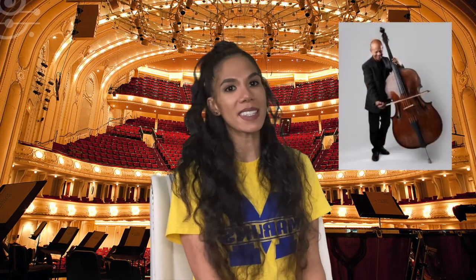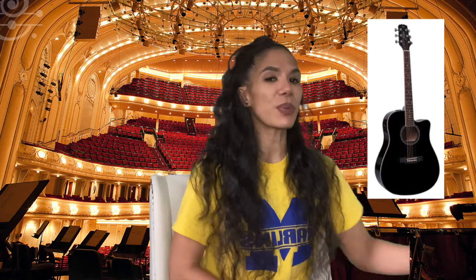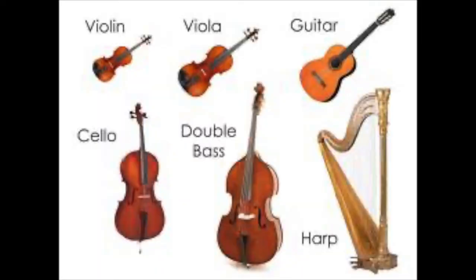Let's start off with the strings family. Instruments that are part of this family are the violin, the viola, the cello, the double bass, and the harp. These are the instruments you would typically find in the orchestra, but there are other members of the string family as well, such as the guitar, and a lot of people consider the piano to be a string instrument as well. The string family includes musical instruments that have strings and produce a sound when the strings are touched or struck.